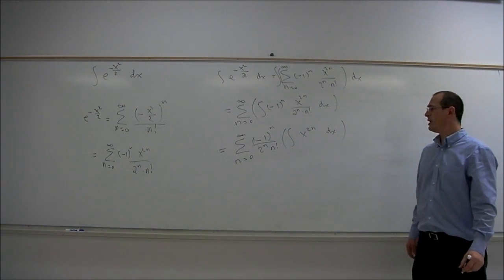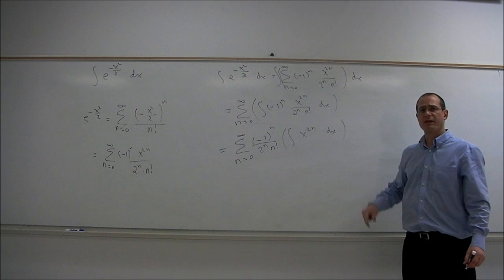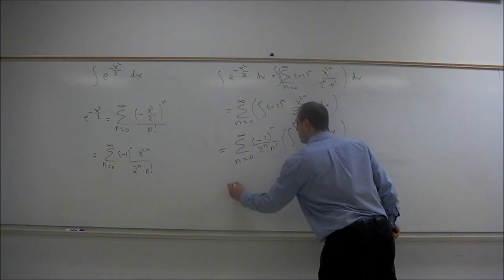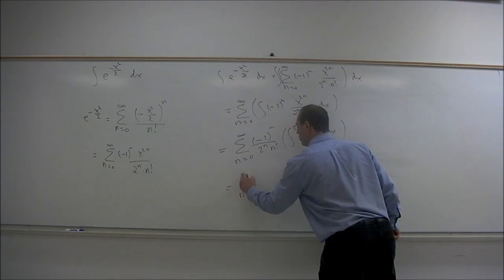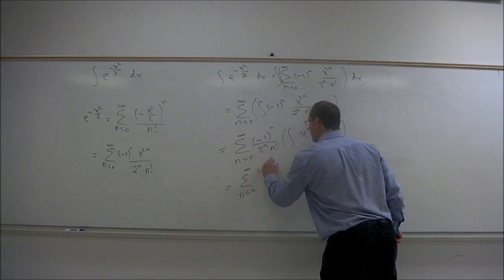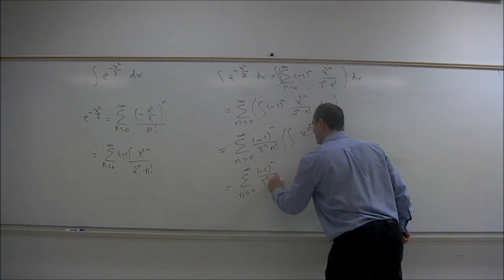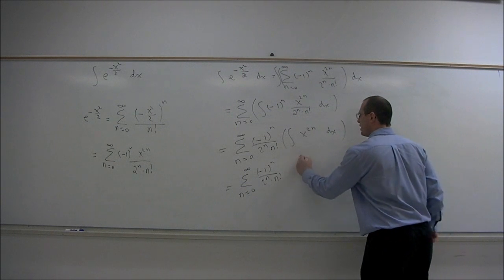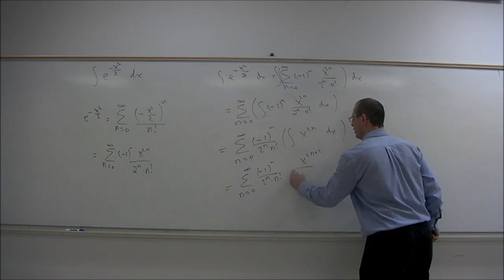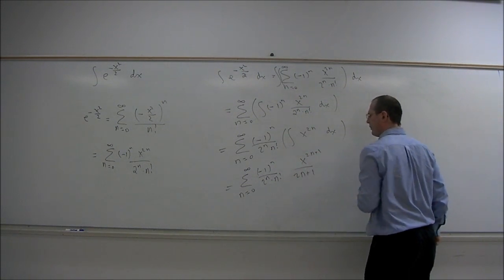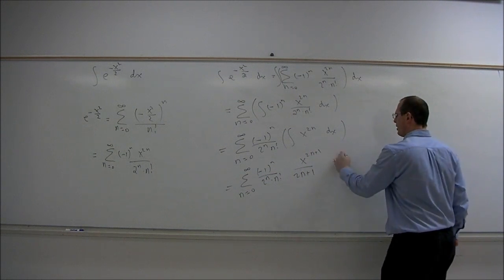So this is now an easy integral, a power function. Simply add one to the power and divide by the new power. So this equals the summation n equals zero to infinity of (-1)^n / (2^n · n!) times x^(2n+1) / (2n+1). And we'll throw in a plus C.